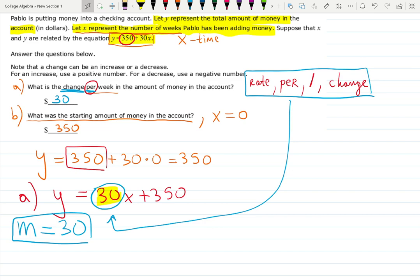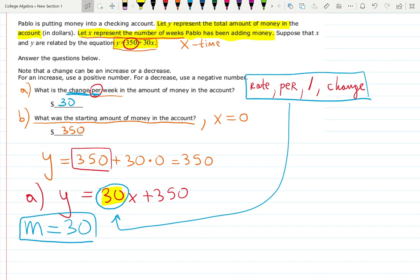And it doesn't really matter what they actually hold behind the problem. Is it investing into an account, or is it something about how many cups we sold and how much money we got from that? Always look at the slope. The slope represents the change. And then always look at the isolated number like 350. That one is the original number, where did we start, what did we start with, and so on.